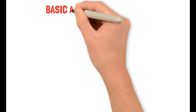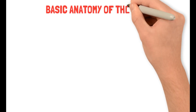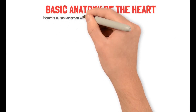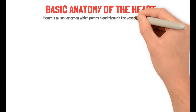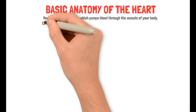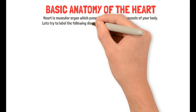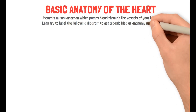Now that we are done with the basic principles, let's talk about the basic anatomy of the heart. As we all know, the heart is a muscular organ which pumps blood through the vessels of your body. Let's try to label the following diagram to get a basic idea of the anatomy of the heart.